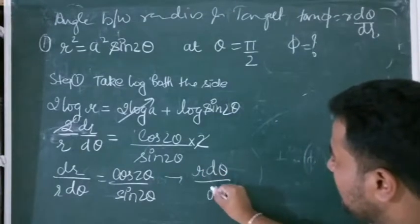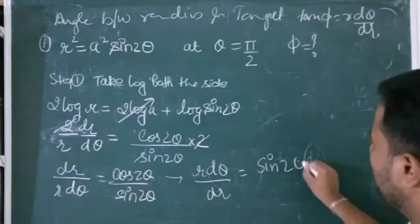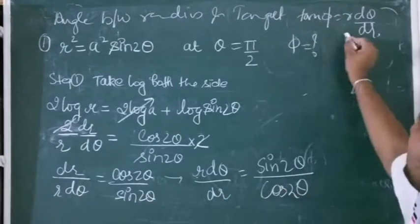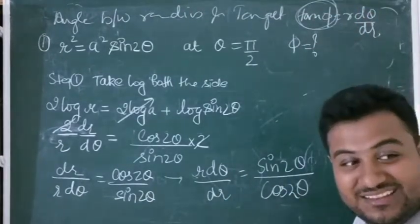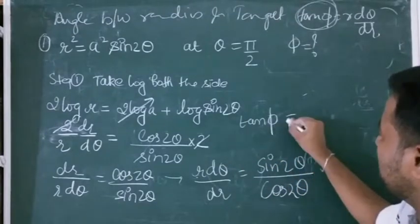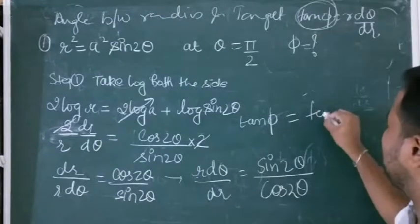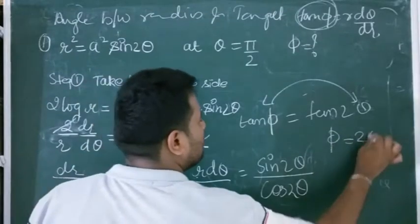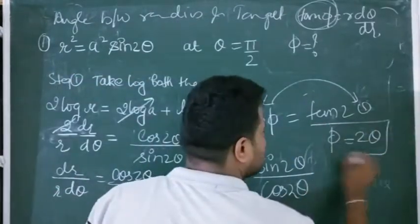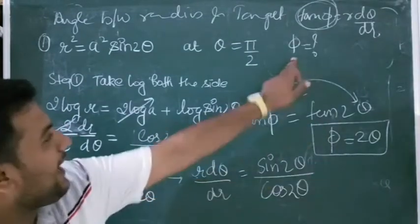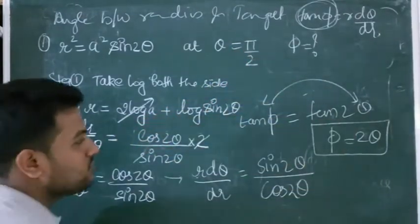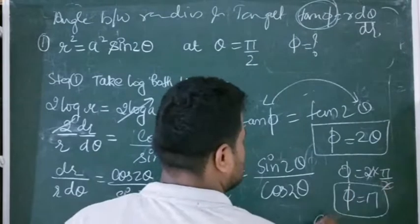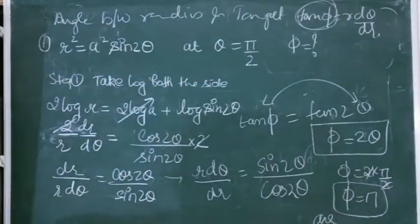Reciprocating gives r·dθ/dr = sin(2θ)/cos(2θ), which is tan φ. So tan φ = tan(2θ), comparing both sides: φ = 2θ. They asked for φ at θ = π/2, so φ = 2·(π/2) = π. That is the answer for this question.